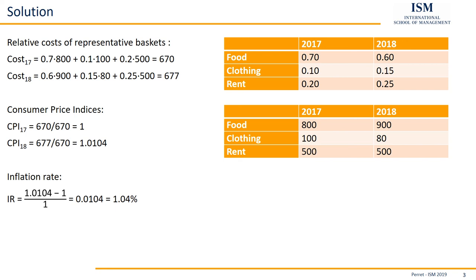That's all there is to this exercise — step by step: first, the cost of the representative baskets; then, the consumer price indices; then, the growth rate of the consumer price indices being the inflation rate. I hope you enjoyed it, and if you are looking for more of these types of exercises, feel free to visit the rest of the exercise set or have a look at the corresponding playlist. Goodbye and see you next time.